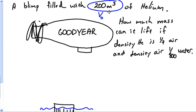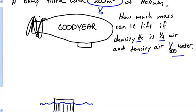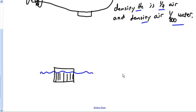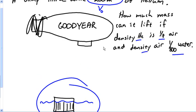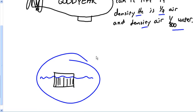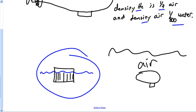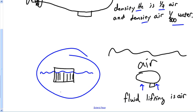The problem gives us the volume of the blimp and some stuff about density — it doesn't directly give us density, which makes you do some calculations. If you're going to work a problem about a blimp in the air, you still have to understand an object submerged in a fluid. In this case, the blimp is submerged in air, so air is what provides the lift.